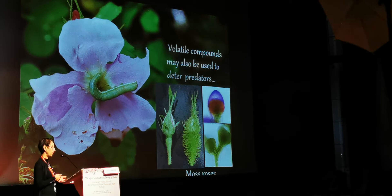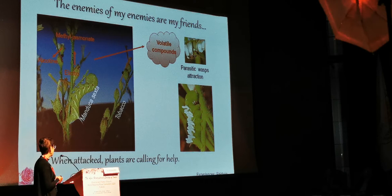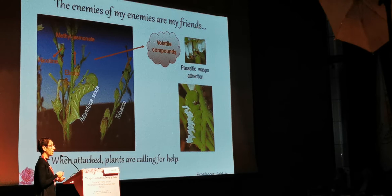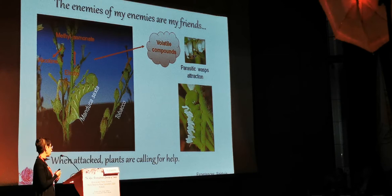There's even more: sometimes when a plant is attacked by insects — here you can see tobacco attacked by big caterpillars — when the plant is attacked, it emits volatile compounds. What these volatile compounds do is attract other insects; here they attract parasitic wasps, and these parasitic wasps will eventually damage and kill the caterpillar. So basically, plants use volatile compounds also to cry for help when they are attacked.